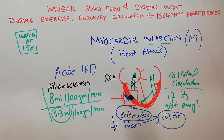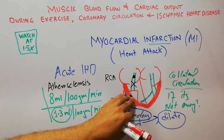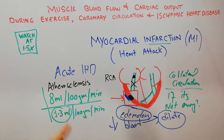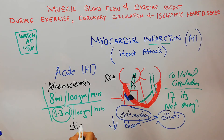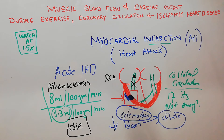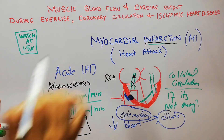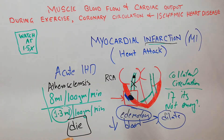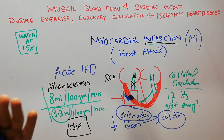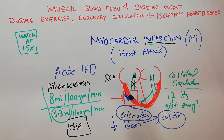If a proper amount of blood is not restored in the proper amount of time, the cells will start dying. Cells in this area will start dying, and this process is known as infarction — because infarction is the death of muscle cells. When this death of cells occurs in the myocardium or heart muscles, it is known as myocardial infarction.